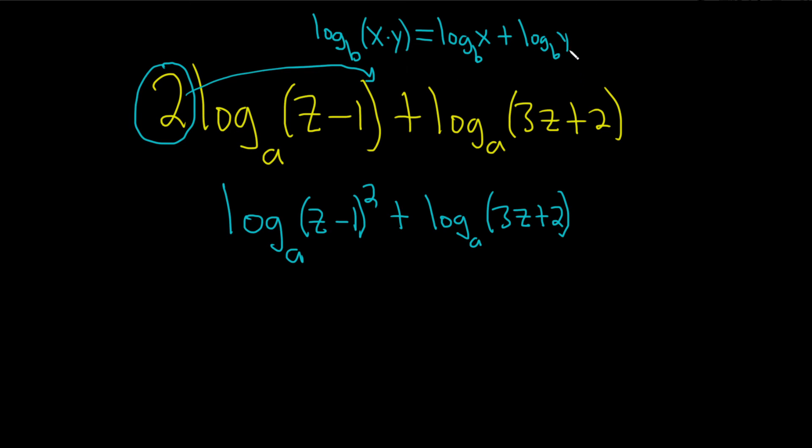So, now we can use the product rule for logs. We have two separate logs. This will become a single log. This will be log base a of, I'm going to put a big parenthesis here and a big one here. And then, basically, you just multiply this times this. So, you would get z minus 1 squared times 3z plus 2.